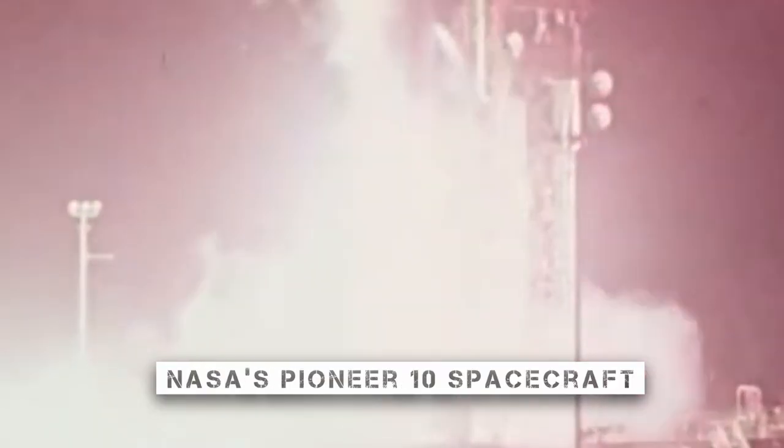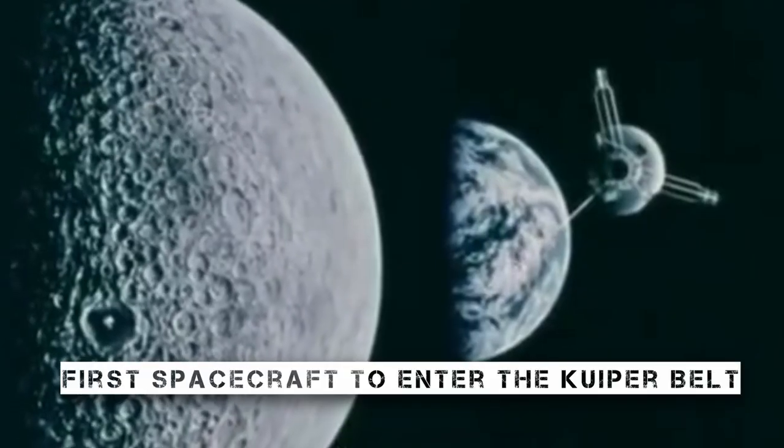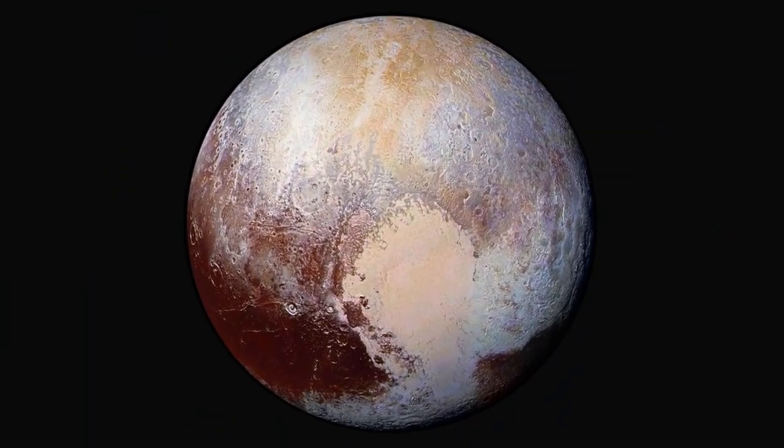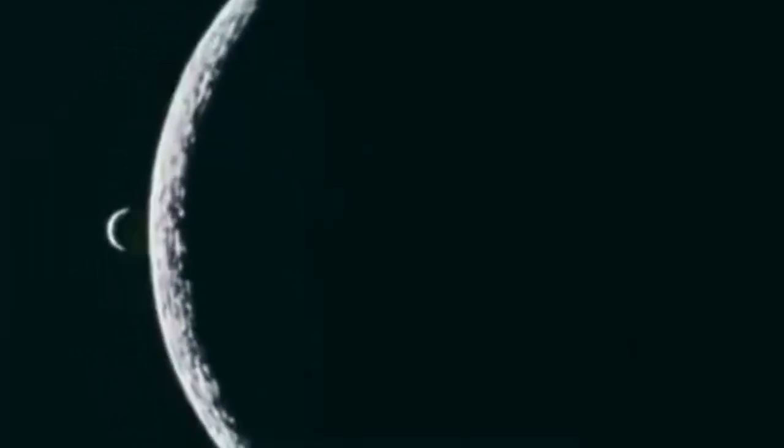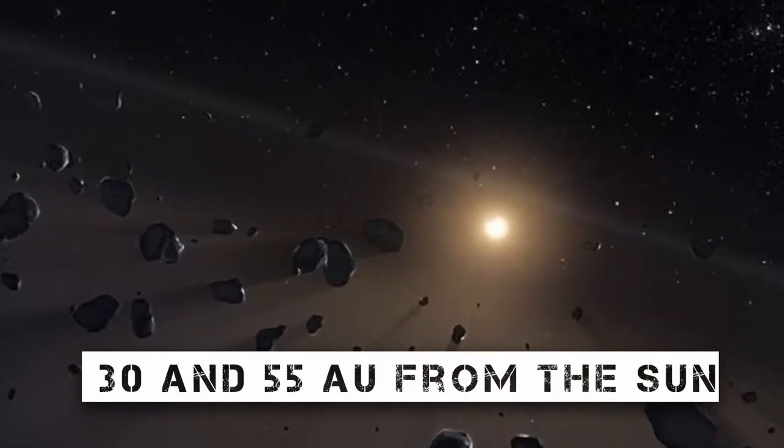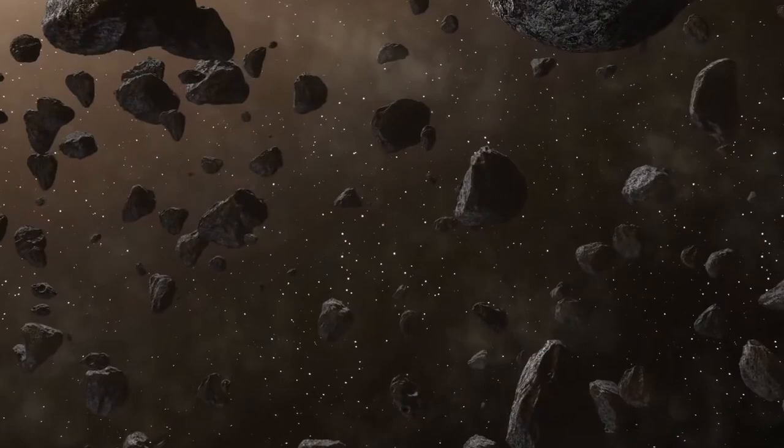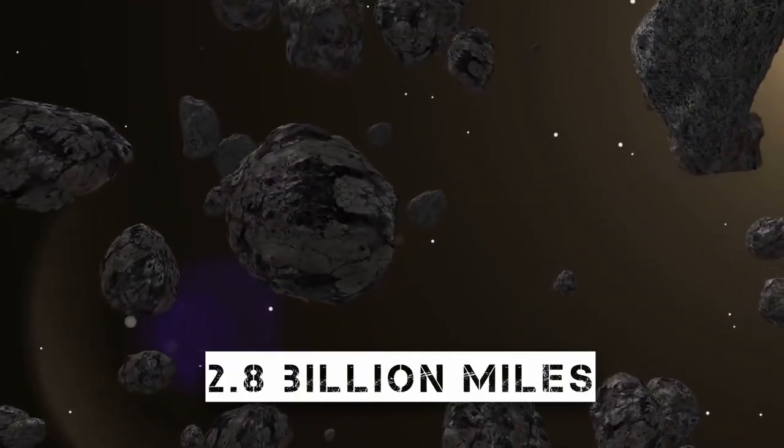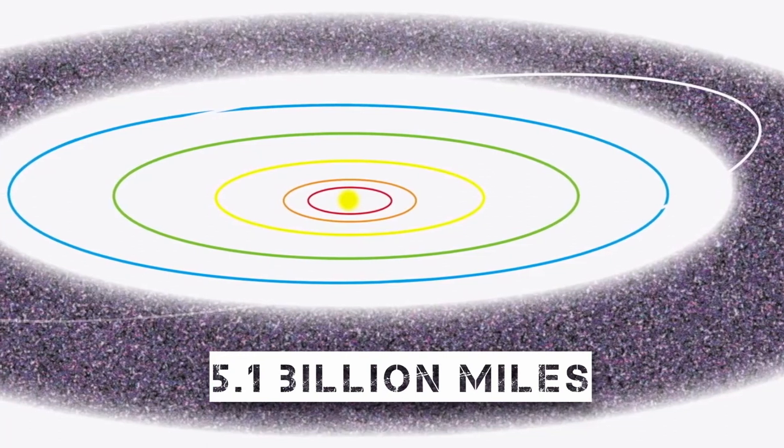When NASA's Pioneer 10 spacecraft entered the region beyond Neptune's orbit in 1983, it became the first spacecraft to enter the Kuiper Belt. Only Pluto has been found at that time. Therefore, no other frozen planets were accessible to the spacecraft. The Kuiper Belt objects are located between 30 and 55 AU from the Sun. This estimates the Kuiper Belt distance from the Sun at a minimum of roughly 2.8 billion miles, and as far away as 5.1 billion miles.